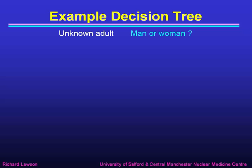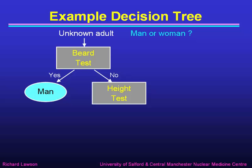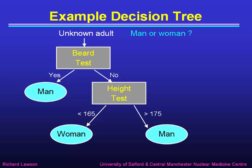Here's an example decision tree. Suppose we have an unknown adult who walks into the room and we need to make a decision: are they a man or a woman? We could apply the beard test because we know that if they have a beard, they're quite likely to be a man. But if they don't have a beard, it's not conclusive, so we could eye them up and use the height test. If they're less than 165 centimetres, we might conclude they're a woman. If they're more than 175 centimetres, we might conclude they're a man. But if they're in the intermediate range of 165 to 175, the height test is still inconclusive and we have to use other tests. That's a rather trivial example, but it does show how you can use a decision tree to do one test and if that's not conclusive, to move on to a second test.